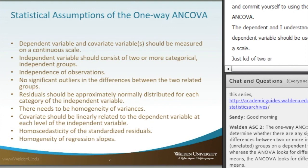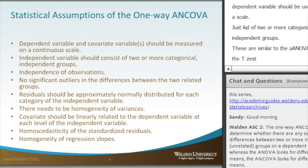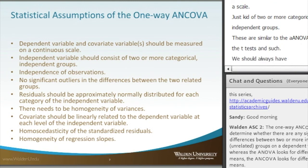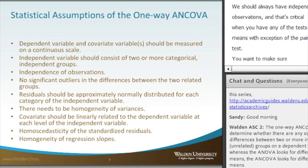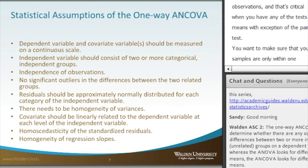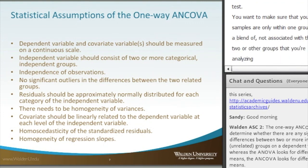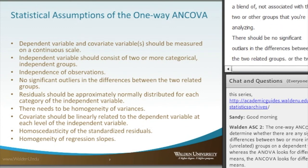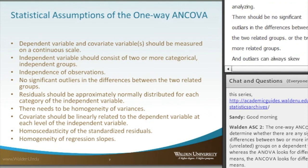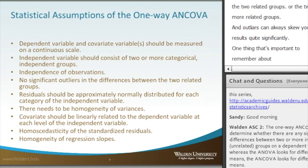We should always have independence of observations, which is really critical when you have any tests of means, with the exception of the paired t-test. You want to make sure that your samples are only within one group, not associated with the two or more other groups that you're analyzing. There should be no significant outliers in the differences between the two or more related groups, as outliers can always skew your results quite significantly. However, sometimes when you investigate an outlier data point, those can be the most interesting of all your data.